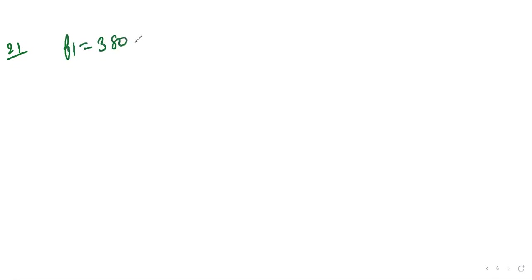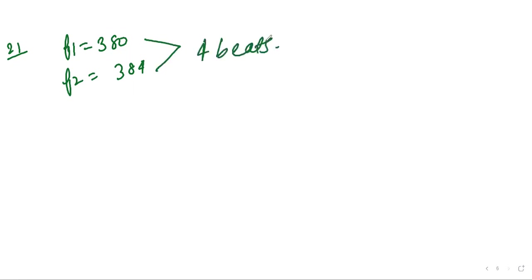Question 21: Two tuning forks have frequencies f₁ = 380 Hz and f₂ = 384 Hz. When sounded together they produce 4 beats. After hearing the maximum sound, how long will it take to hear the minimum sound? This was asked in 1998.